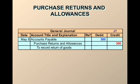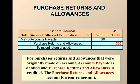For purchase returns and allowances in a periodic inventory system, we reverse that. It's like we are returning goods we no longer need, or they're damaged, or there's something wrong with them. We're going to credit purchase returns and allowances, which is a contra-expense account with a normal credit balance. And we're going to debit accounts payable to lower the amount of money we owe.